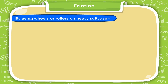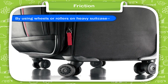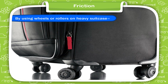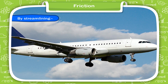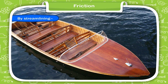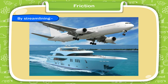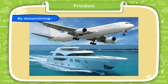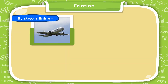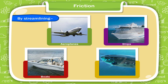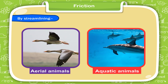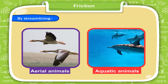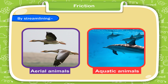4. By using wheels or rollers on heavy suitcases — we can reduce friction by using wheels or rollers so that we can pull the suitcase easily on the ground. 5. By streamlining — objects moving in air or water encounter a lot of fluid friction. Resistance is reduced by making the body of these objects streamlined. A streamlined body is narrower in front and broader at the back. For example, aeroplanes, ships, boats, submarines, etc. have streamlined bodies. The bodies of aerial and aquatic animals like birds and fish are also streamlined, which helps them in flying in air and swimming in water respectively.